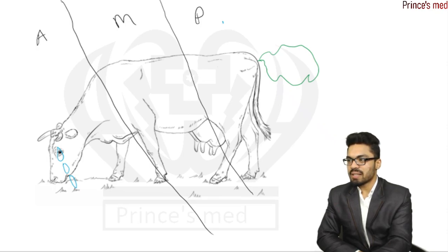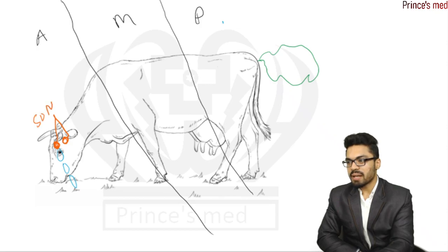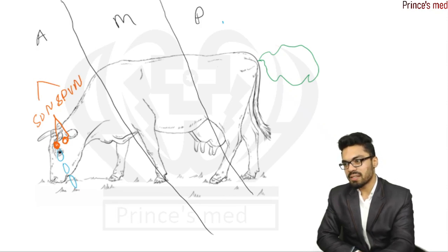And in anterior section we have above eyes supraoptic nucleus and paraventricular nucleus. And above eyes is present tears, so supraoptic nucleus and paraventricular nucleus has function of water balance as tears resemble water.